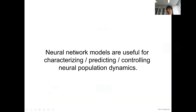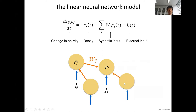How do we characterize neural population dynamics? Often models are important. Neural network models are useful for characterizing, predicting, and controlling neural population dynamics. There are multiple directions for modeling a population of neurons. One approach is using a deterministic model. I would like to talk about characterizing neural population dynamics using a deterministic model, because arguably it's simpler than stochastic neural models, and it can still capture some essential features of neural population dynamics.